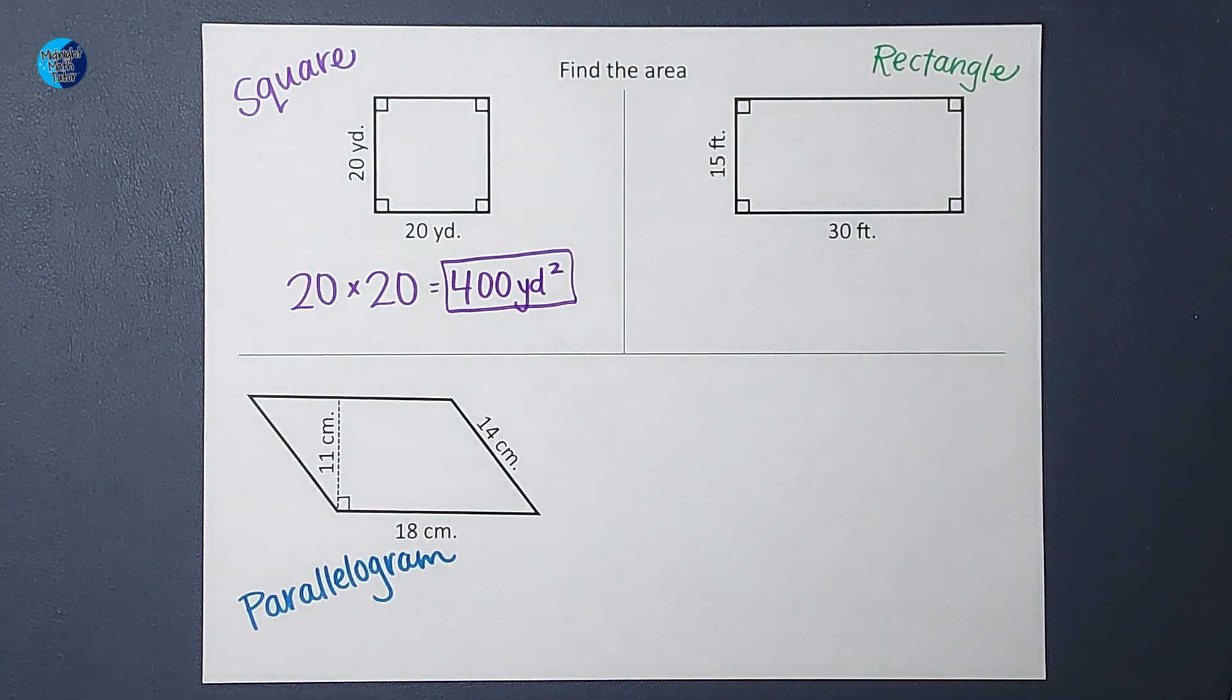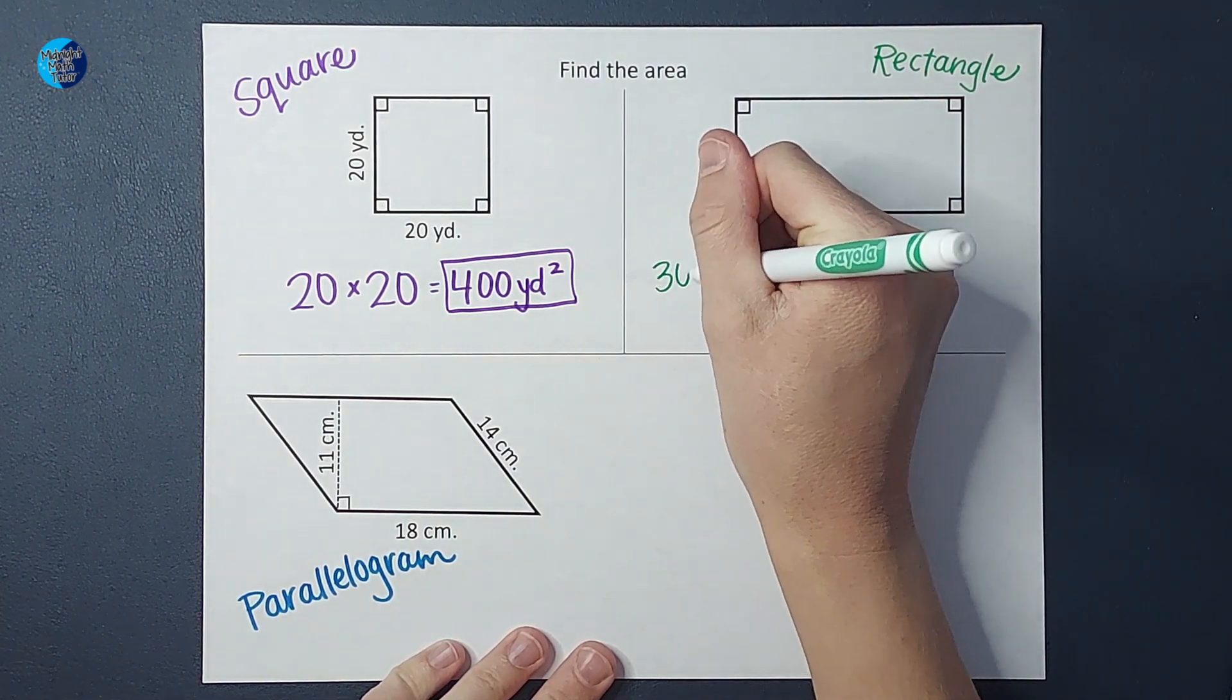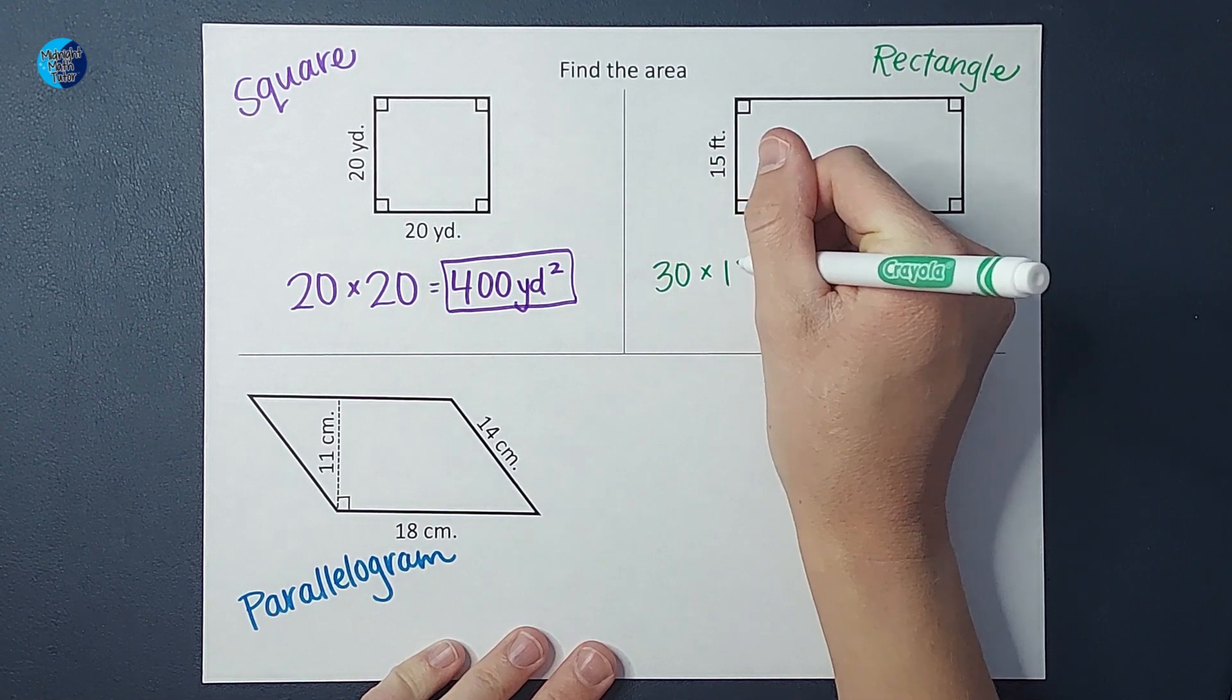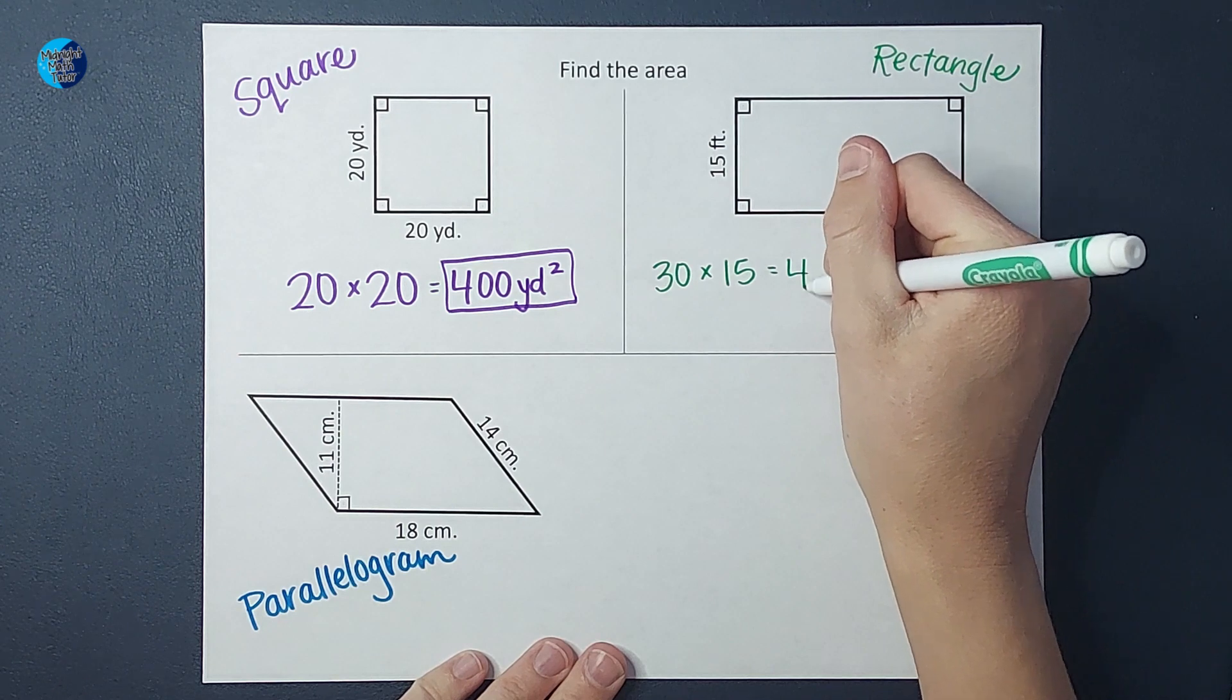All right, let's go ahead and take a look at this rectangle. Base times height is going to be 30 times 15. When I multiply those, I end up with 450.